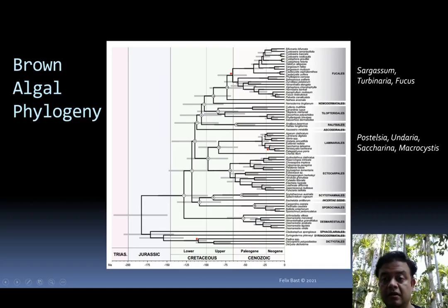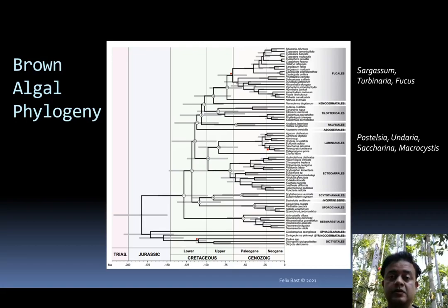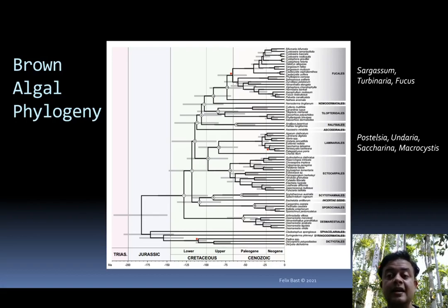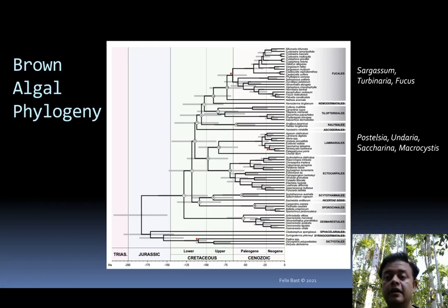The most important clades of brown algae — setting aside the rank, whether it is class, division, or subclass — all these things are arbitrary. Looking at the named groups which are all monophyletic, the most important group is Fucales. The very famous brown algae, Fucus, belongs to Fucales, and also Sargassum and Turbinaria, two very important seaweeds of the Indian coast. Sargassum can be seen everywhere, and Turbinaria is especially found on the southern coast of Tamil Nadu. Fucales is a very important group.